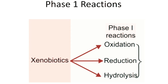In phase 1 reactions, the xenobiotic is modified by adding a functional group. That additional functional group may be added by oxidation, reduction, or hydrolysis. The product formed after phase 1 modification is called the phase 1 metabolite or primary metabolite.